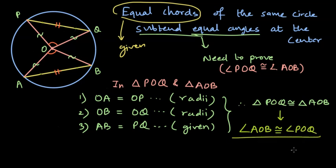And this is what we needed to prove. And we can conclude that equal chords of the same circle subtend equal angles at the center. I am using the word same circle, but if we have congruent circles, and if we have equal chords in both of them, then as well, the angles that both of those chords will subtend at the center will be equal.